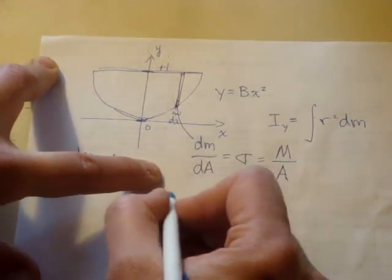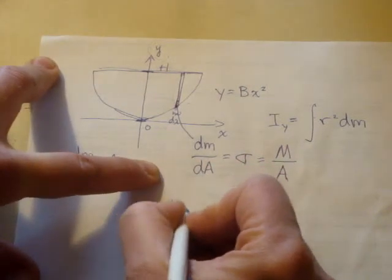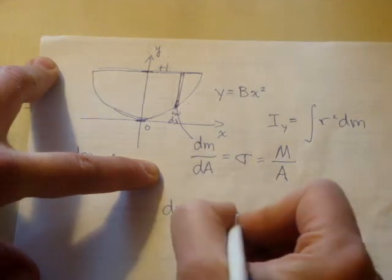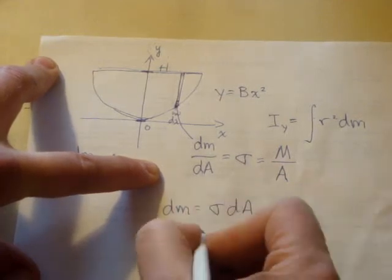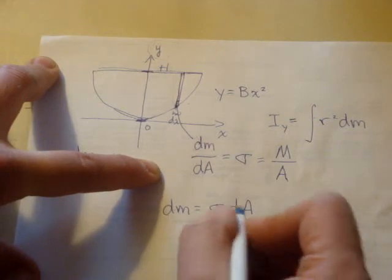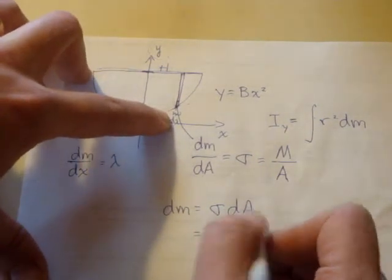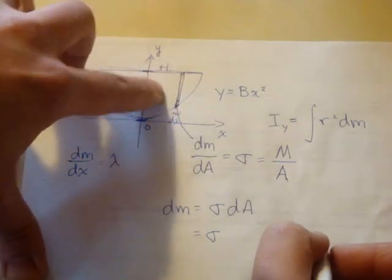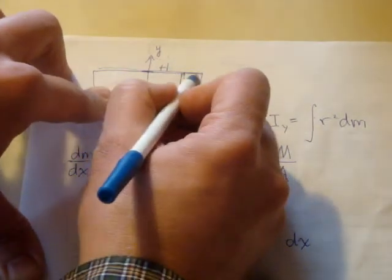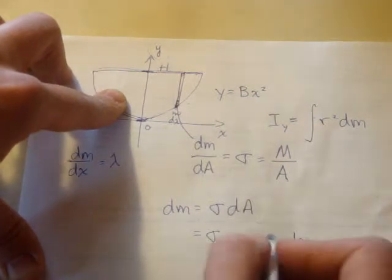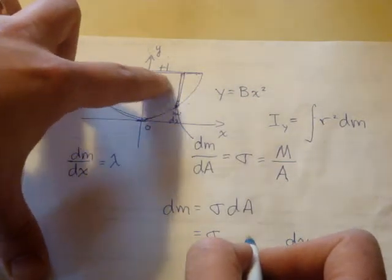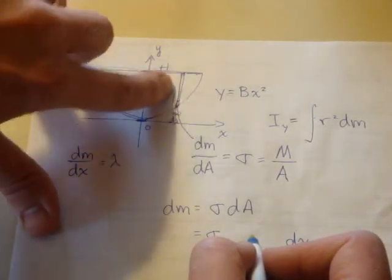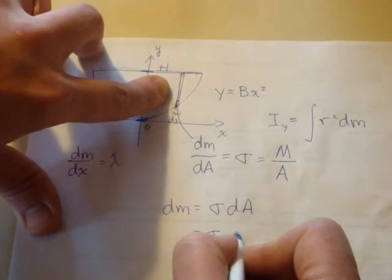That differential area, we want to describe this dm as being equal to sigma times dA. That differential area is equal to the width of that strip, which is dx, times the length of that strip, which is always going to be equal to some value of y, but a very special value of y, depending on where it's located along that strip.